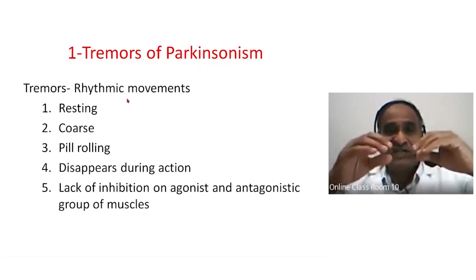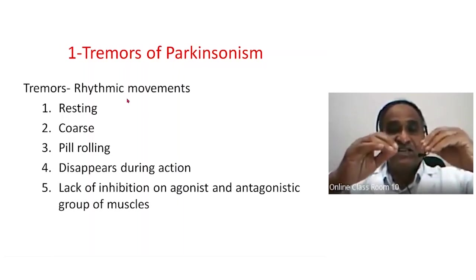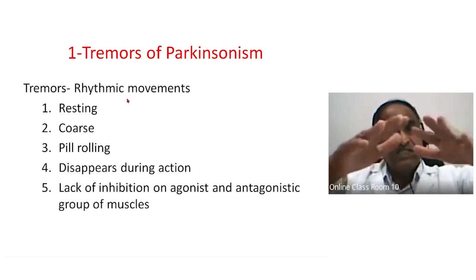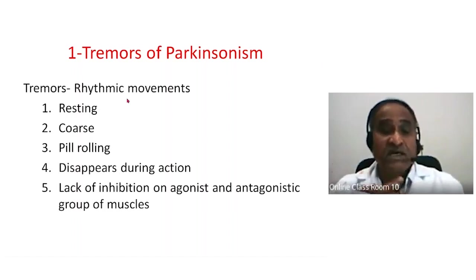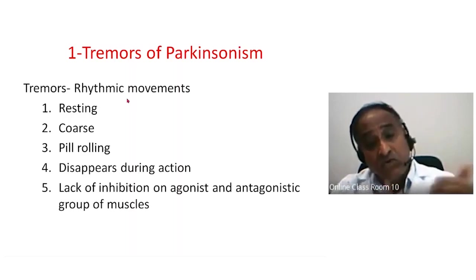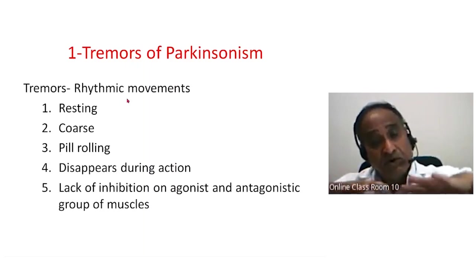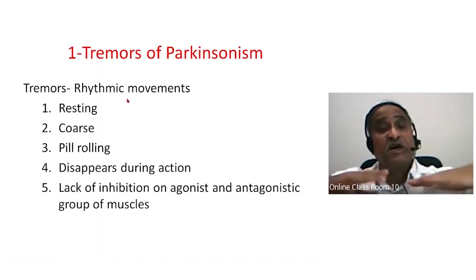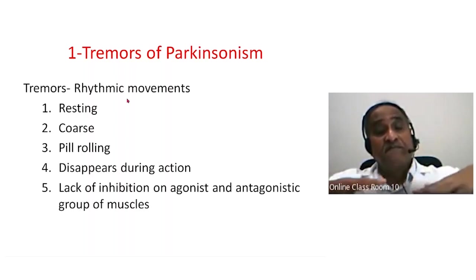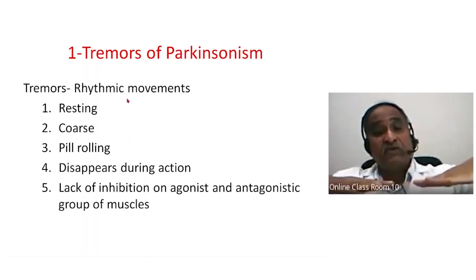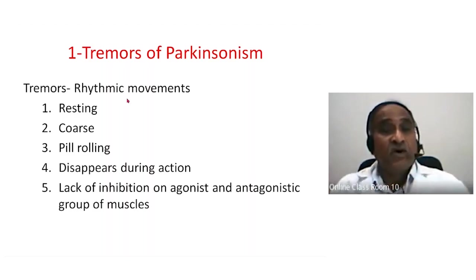These resting tremors disappear when the person begins to perform an action. This is because of a lack of inhibition: the GPI basal ganglia outputs should reach the pontopeduncular nucleus, which controls the pattern activity of rhythmic actions in agonist and antagonist muscle groups. When the oscillations are not dampened, the agonist and antagonist muscles oscillate, producing tremors.